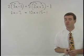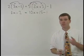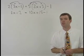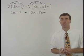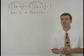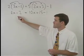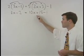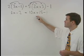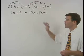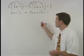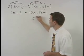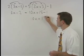Now here's the most important step. Before moving on, make sure that you've simplified both sides of the equation as much as you can. Notice that the left side of the equation cannot be simplified any further. But on the right, 10x plus 15 minus 1 can be simplified to 10x plus 14.